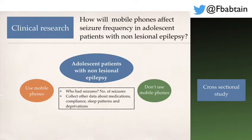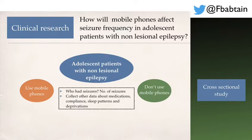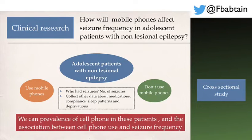I collect additional data on medications, compliance, sleep patterns, and sleep deprivation. Getting more information about your population is crucial — you don't only look at cell phone use versus no use and seizures versus no seizures. You build a database examining other variables that may affect your outcome. By the end, you can understand the prevalence of cell phone use and estimate the association between cell phone use and seizure frequency. This type of study is a cross-sectional or prevalence study.